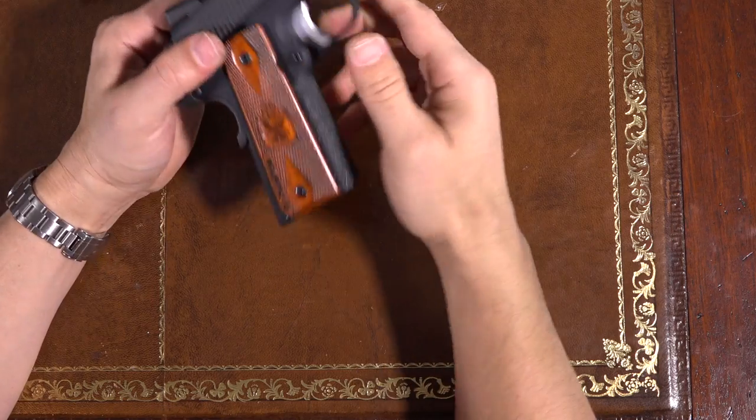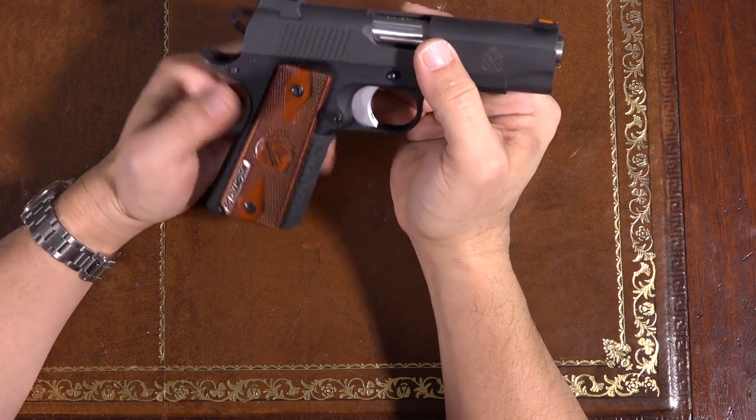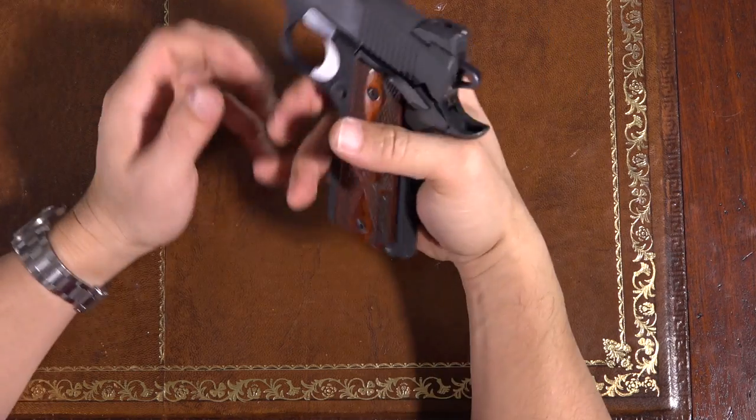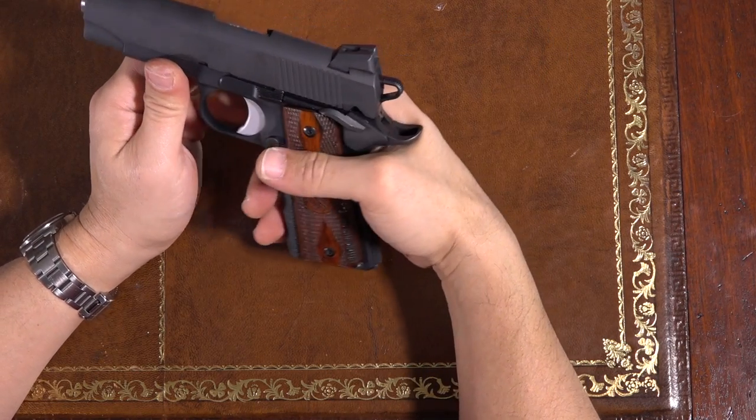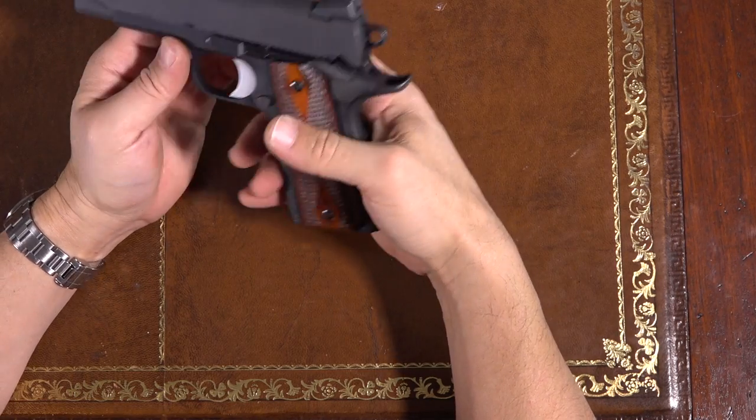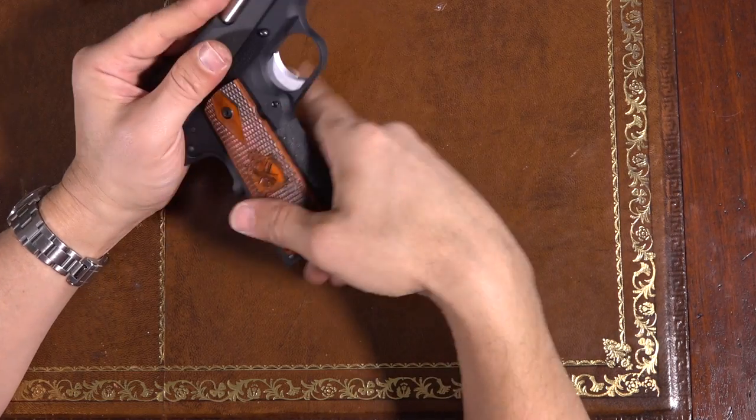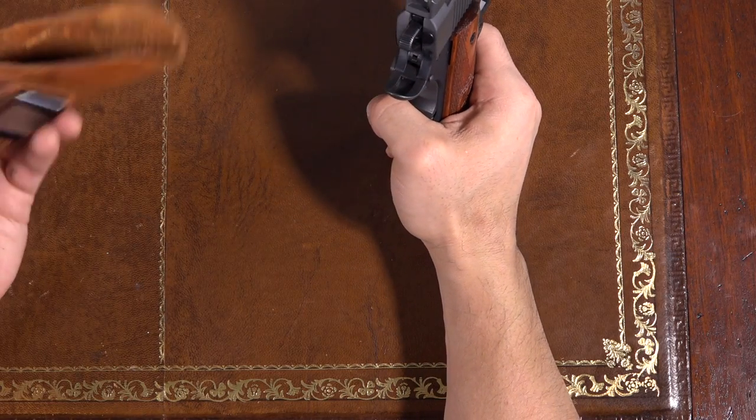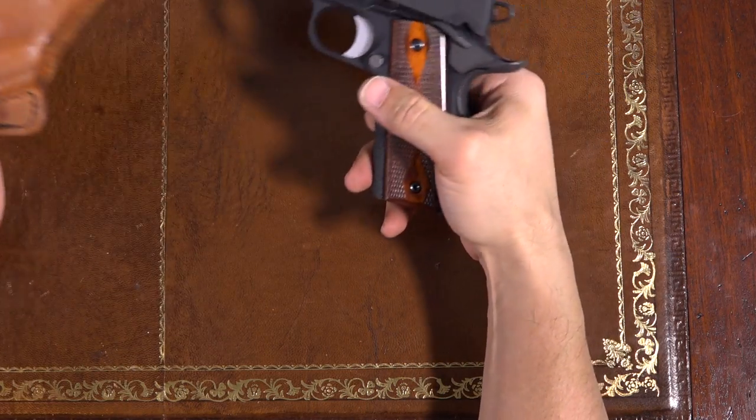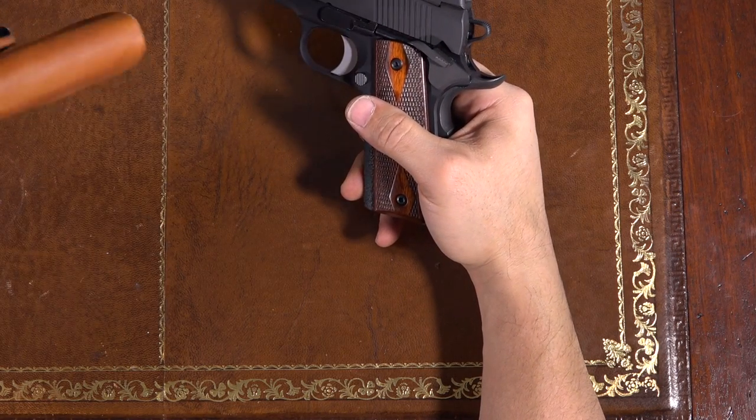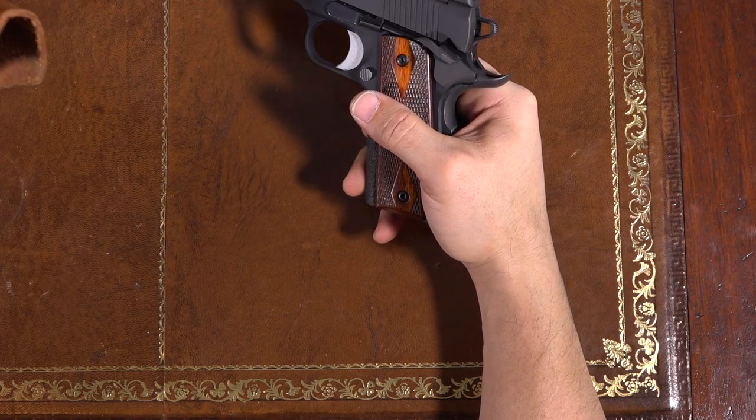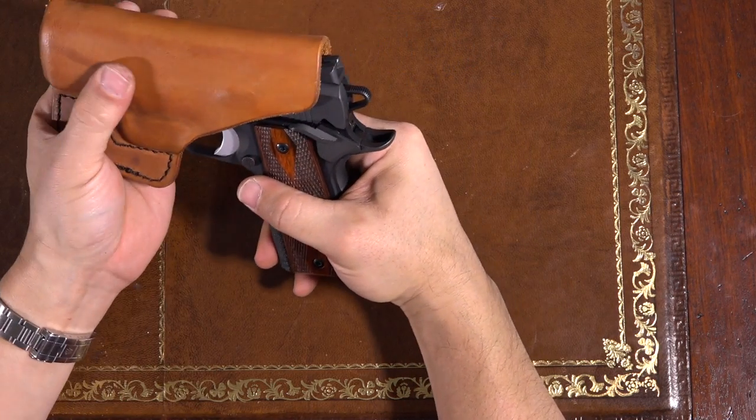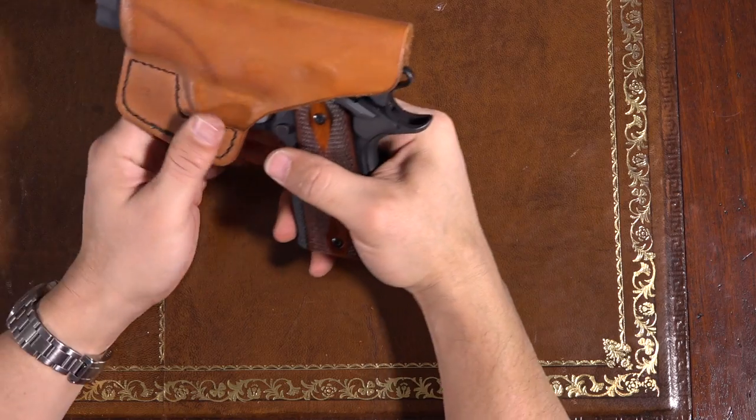So that was just a quick look at the Range Officer Champion. Again, commander size, four inch barrel, full size grip. If you're thinking about one, I'm very happy with this gun. I think it is a fantastic piece. Just as a final note, if you were planning on getting one of these for carry purposes, my normal carry piece is a Walther PPS. This is a holster for the PPS inside the waistband and you can see that it actually fits right into that holster. Obviously this is a little bit longer than the PPS.